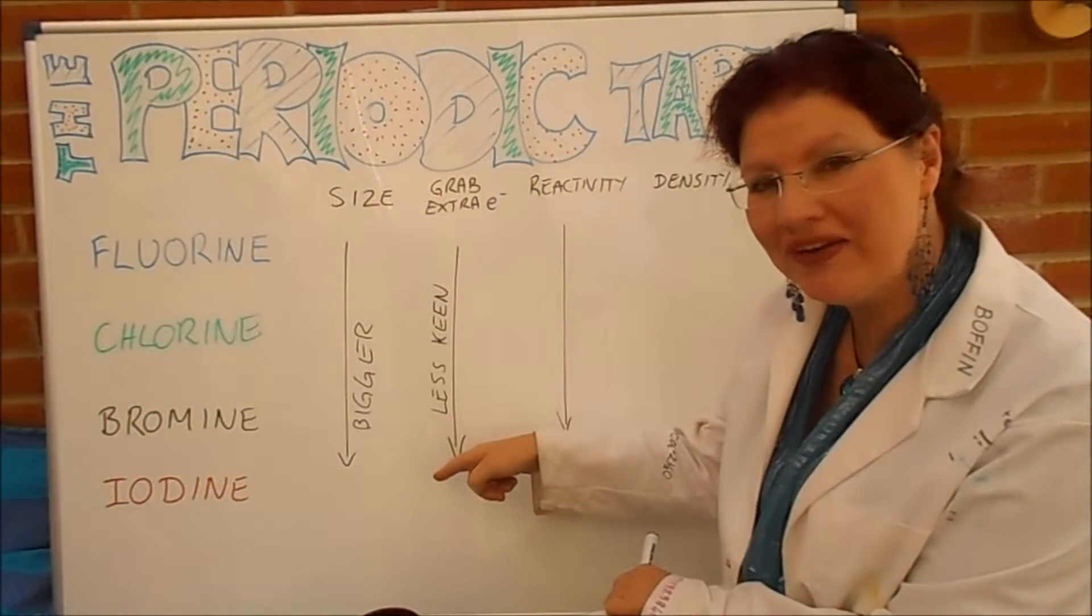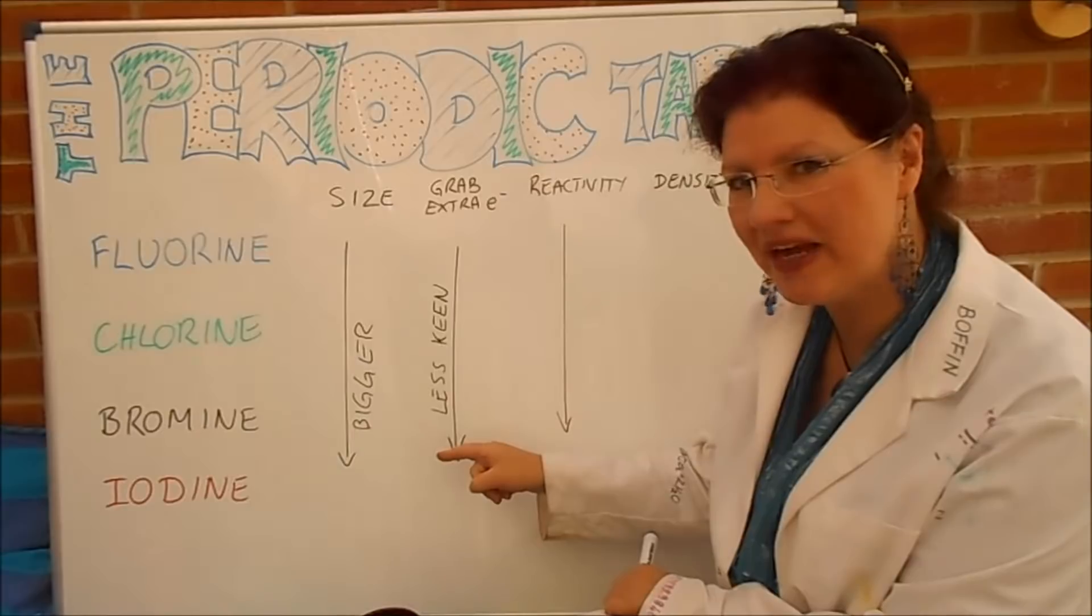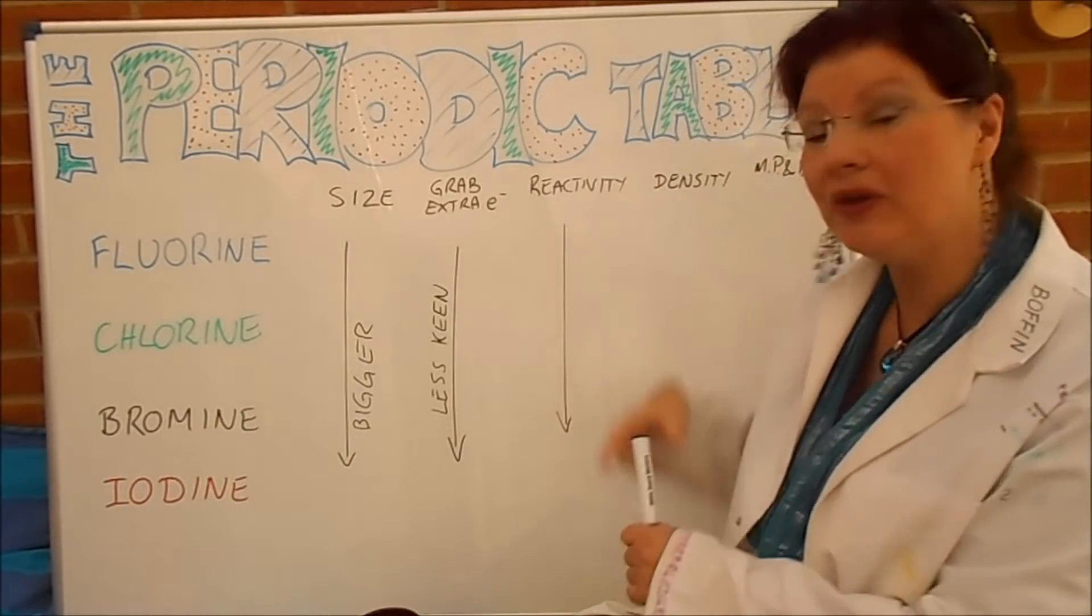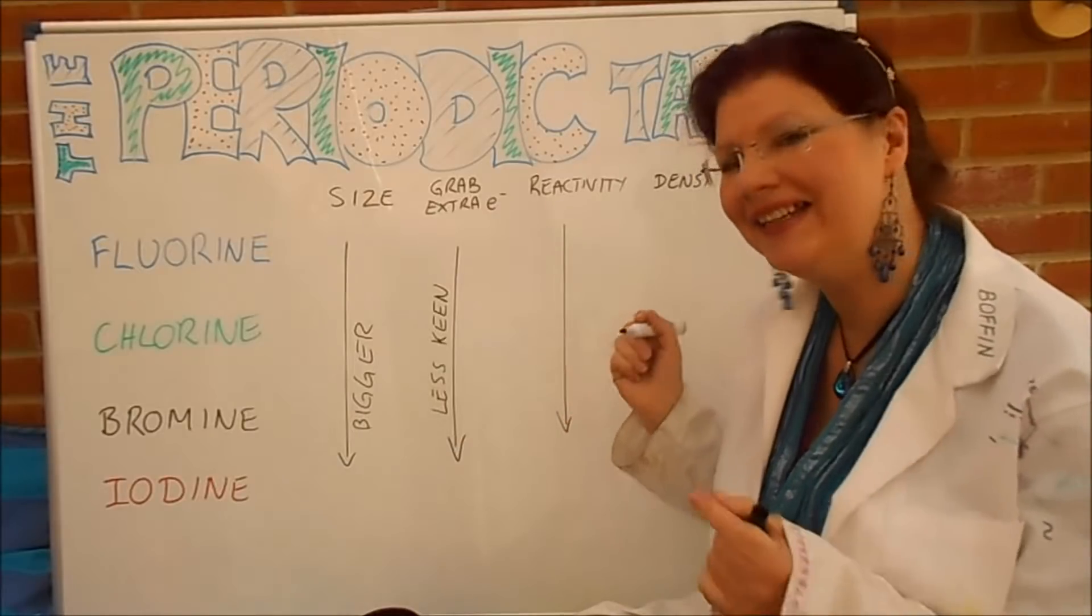Well, since these ones down here are less keen to grab a spare electron, they must be less reactive. So as you go down the group, reactivity decreases.